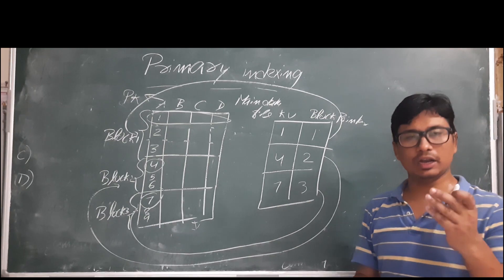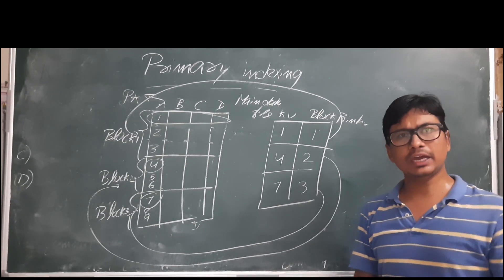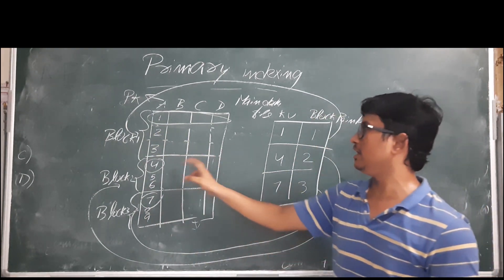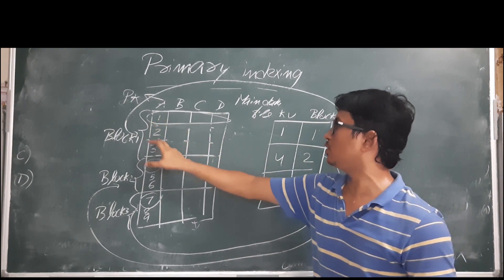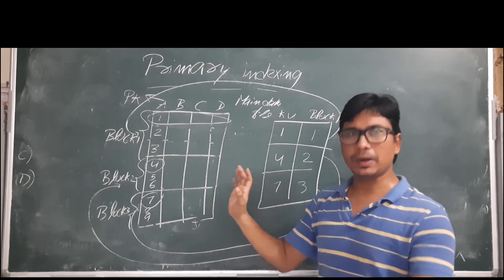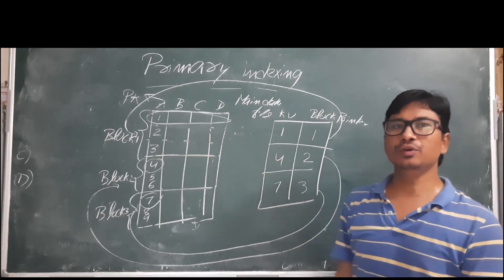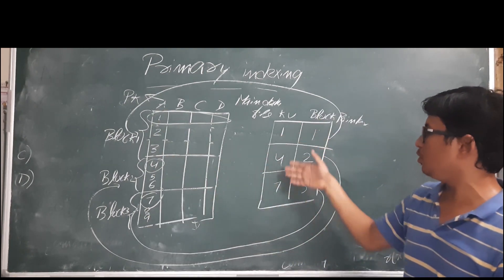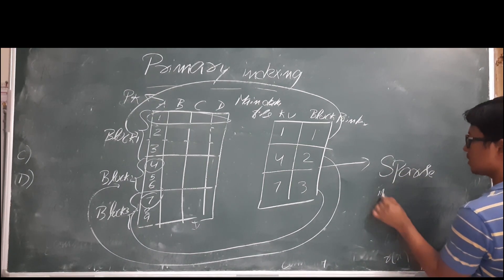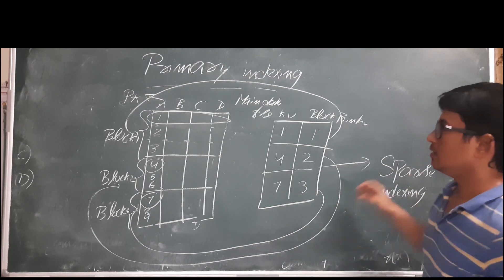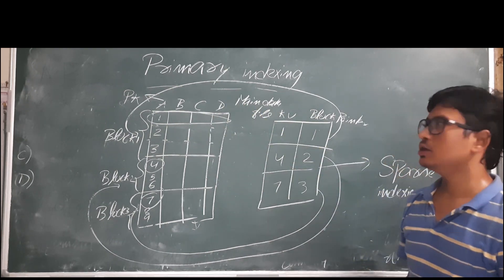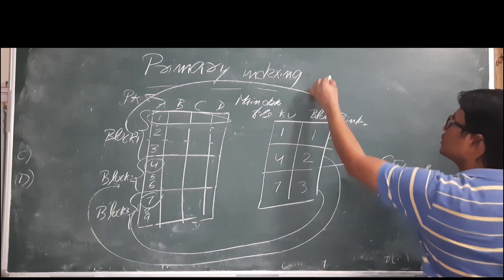We have already discussed dense indexing and sparse indexing. In dense indexing, the index file has an entry for all records — entries 1 through 9 would all appear. In sparse indexing, entries exist for only some records. Since out of nine records we have only three entries in the index file, we can say it uses the sparse indexing concept. So the index file is small and easy to search.